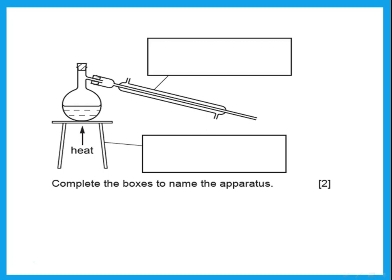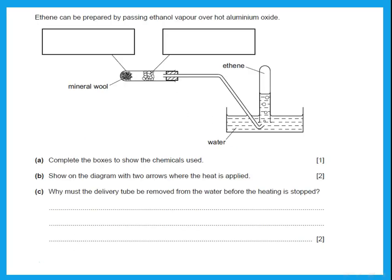Complete the boxes to name the apparatus: the first apparatus on top is a condenser, and the other one is a tripod stand. You must know these names — this is basic chemistry. Ethene can be prepared by passing ethanol vapor over hot aluminum oxide. Complete the boxes to show the chemicals, not the names of the apparatus.